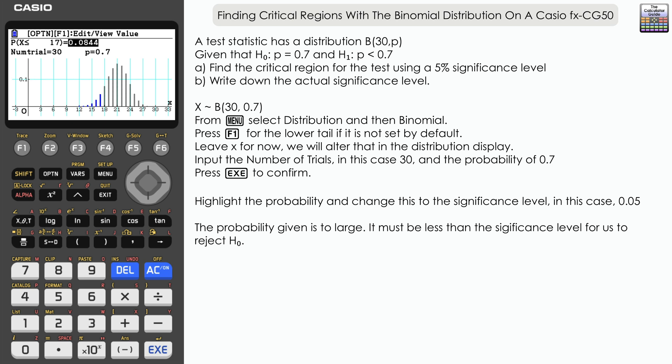...essentially goes to the first value or the closest value that is within the acceptable range, and you can see that the probability given there is too large. We're looking for less than or equal to 0.05.